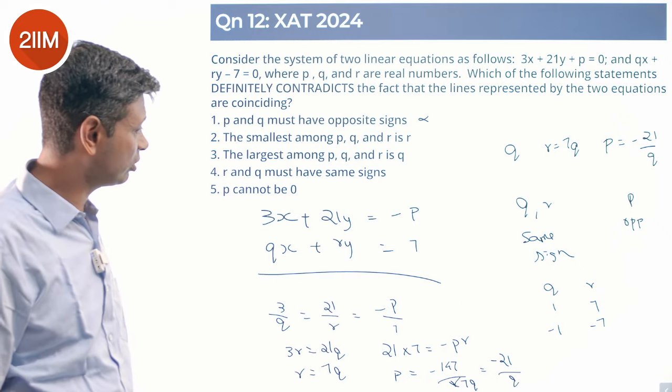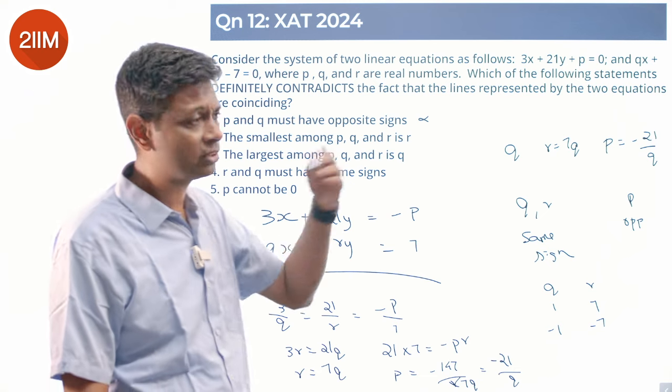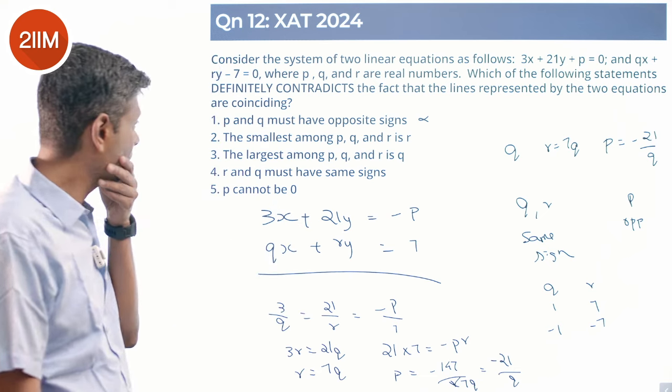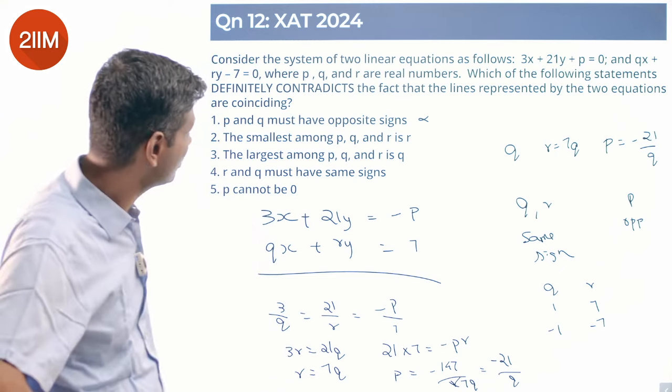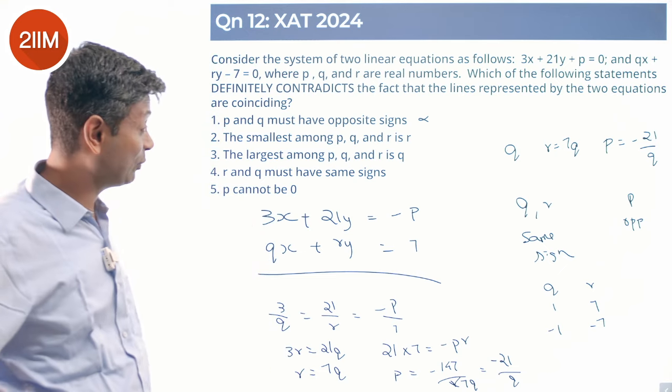R and q must have same signs - that is true. P cannot be 0 - p cannot be 0 is true, it doesn't contradict anything. P is minus 21 by q. First cut, I look at all of this and go, look, none of these contradicts. Now I am worried about these two.